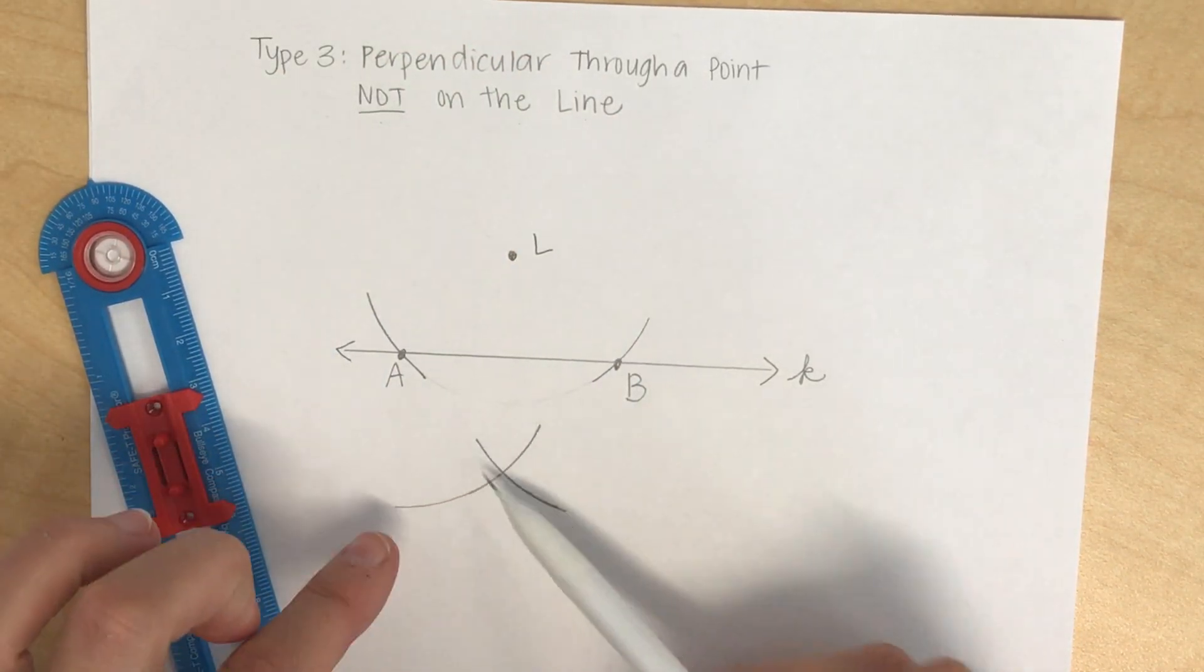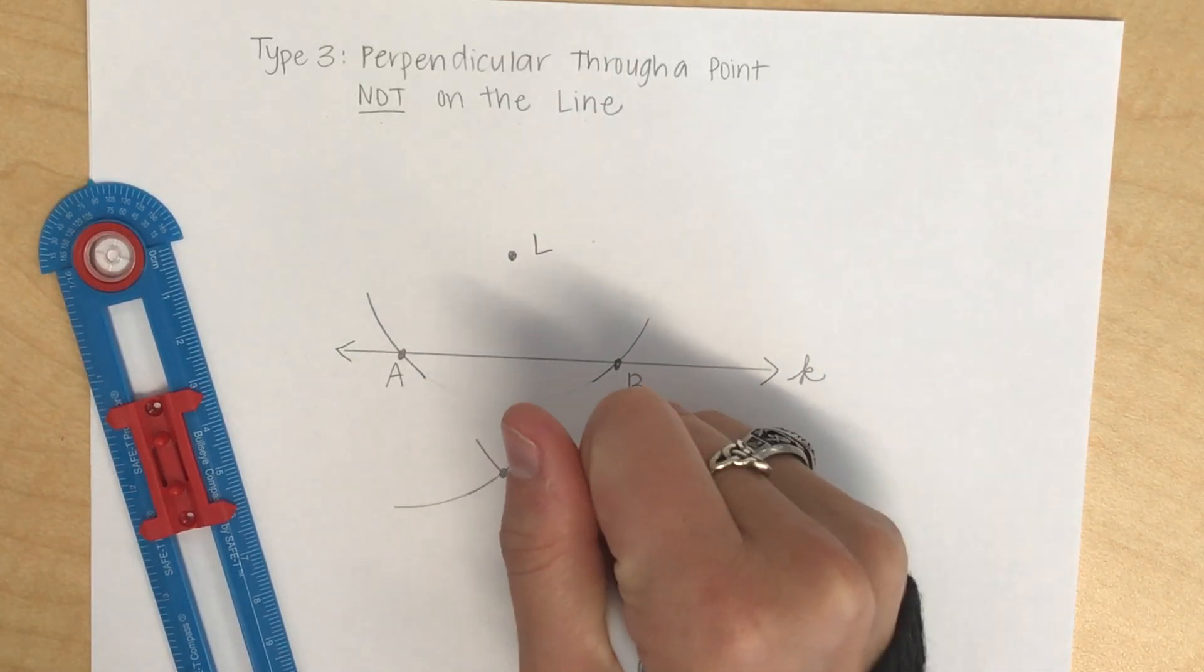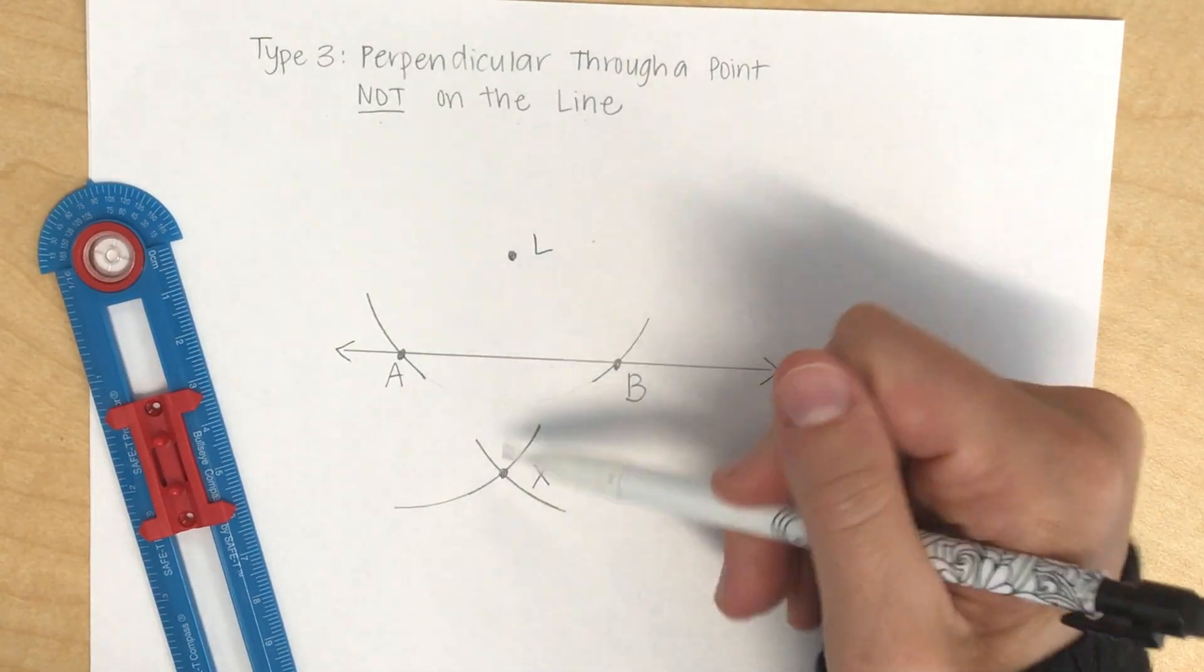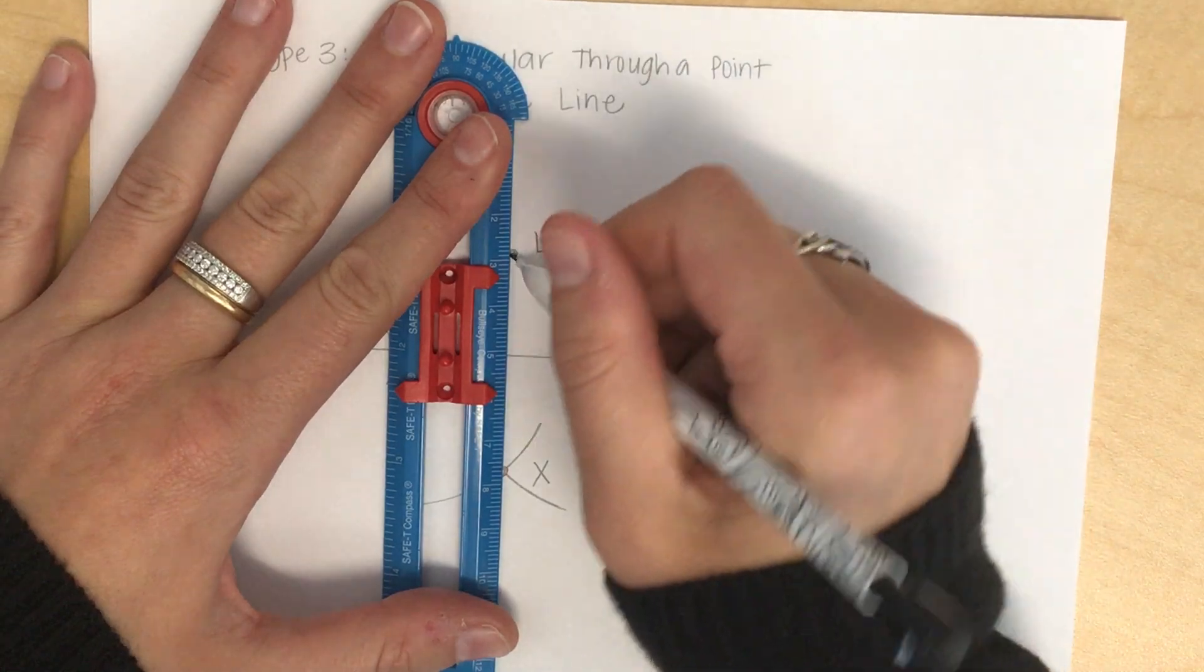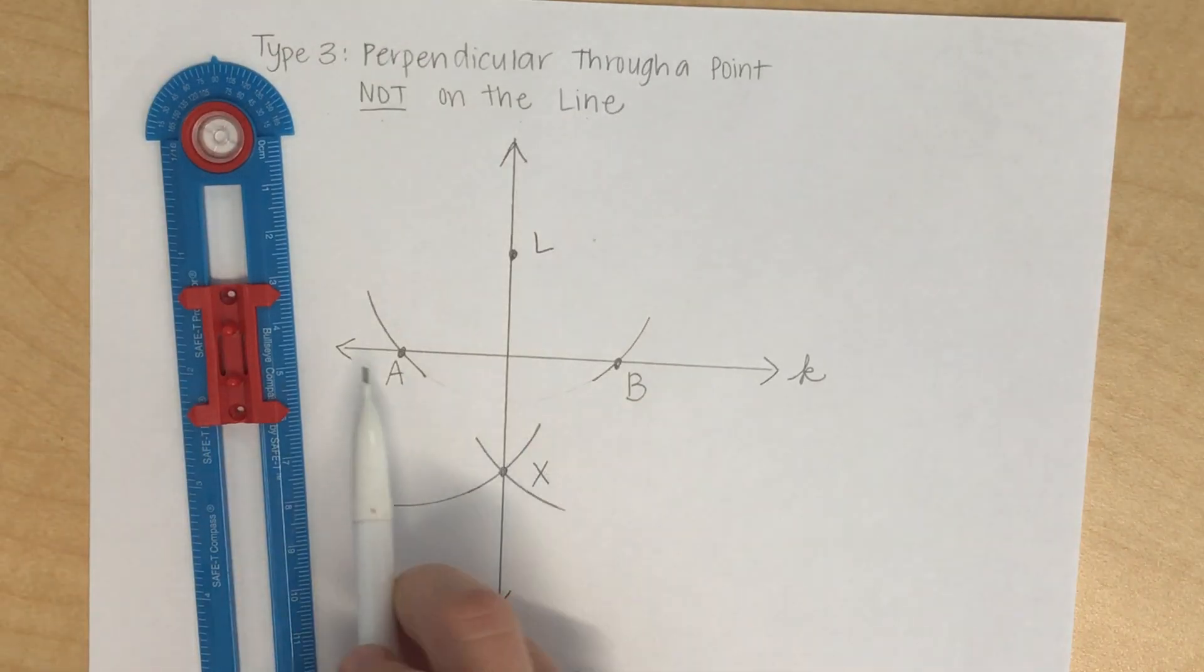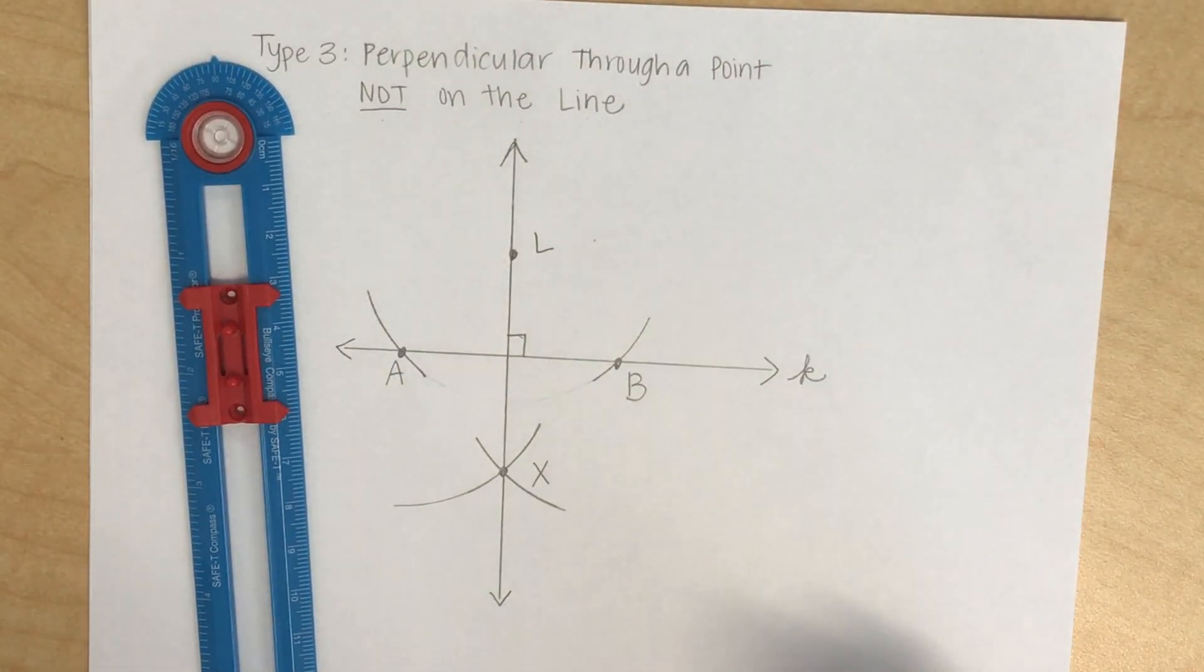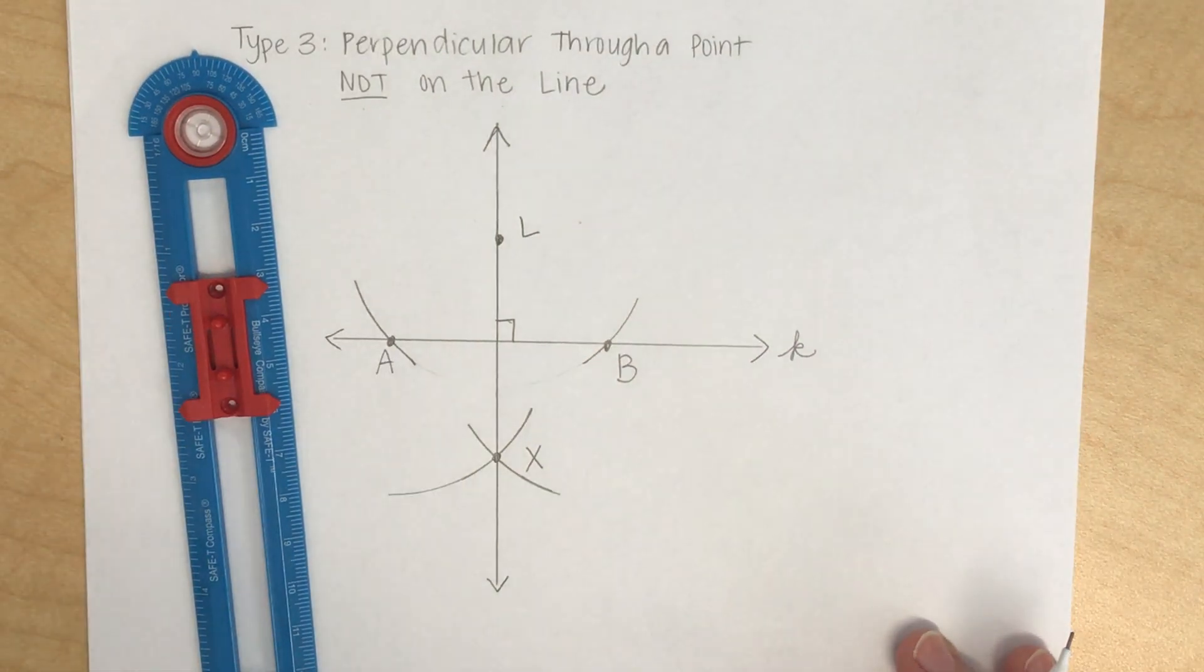This point where my two arcs intersect, I'm going to label it as point X. Using my straight edge, I'm now going to draw a line LX. And now, I have created a perpendicular line to this line K. So this is a 90 degree angle now, perpendicular. And it went through this point L that was not on the line.